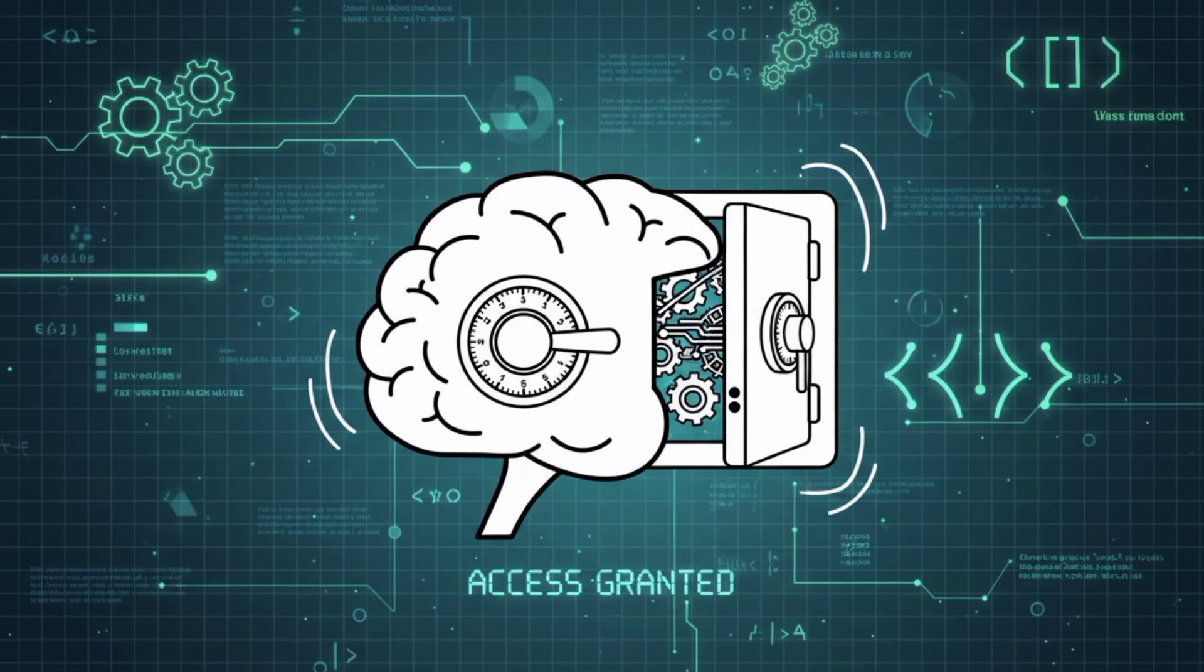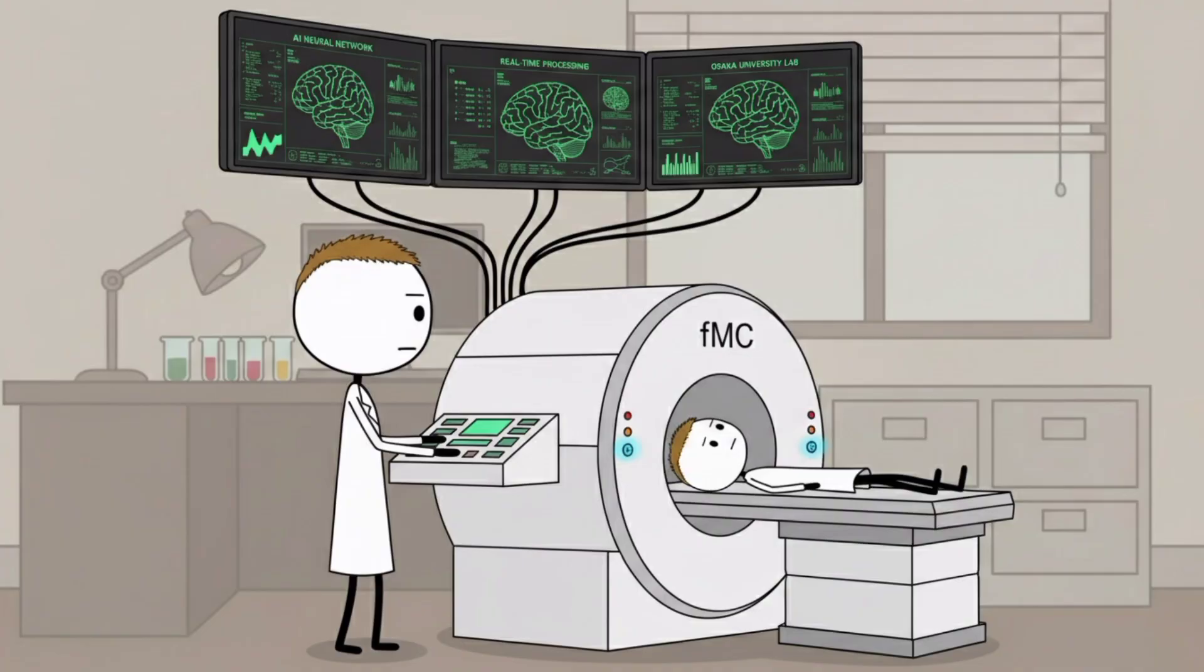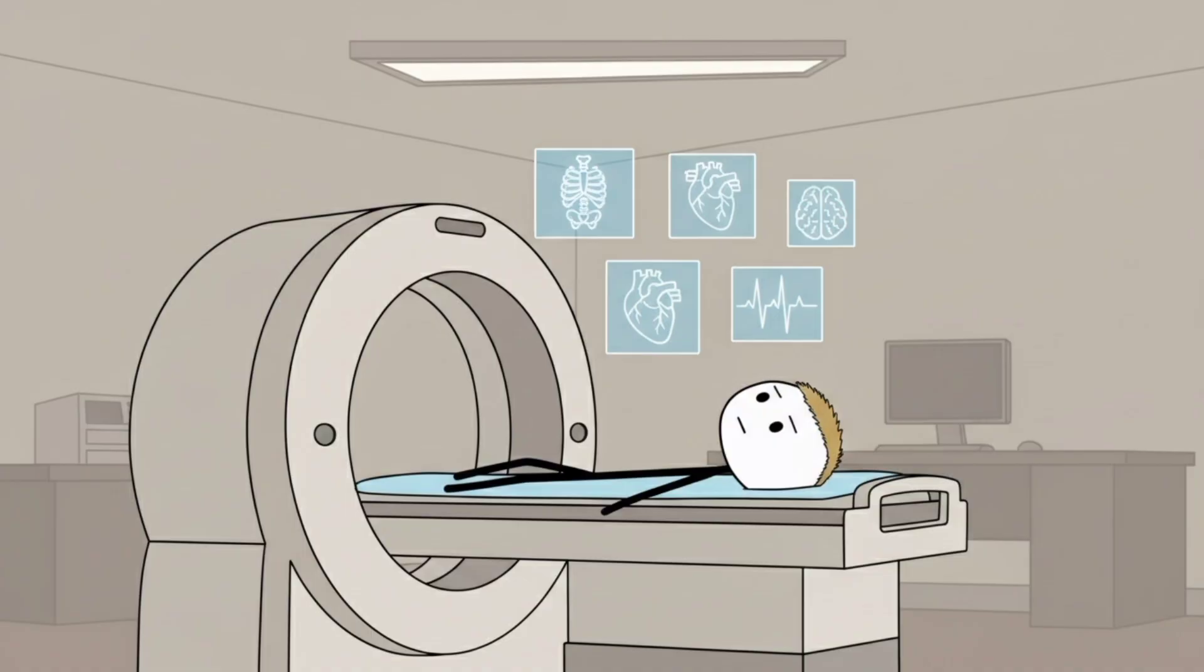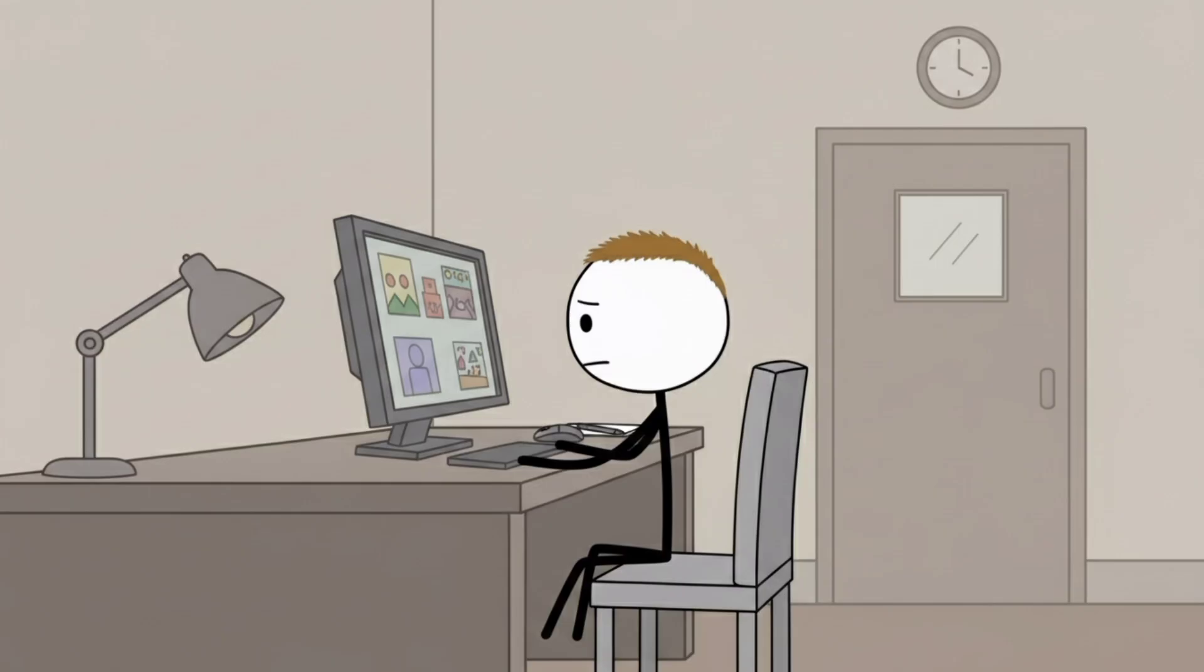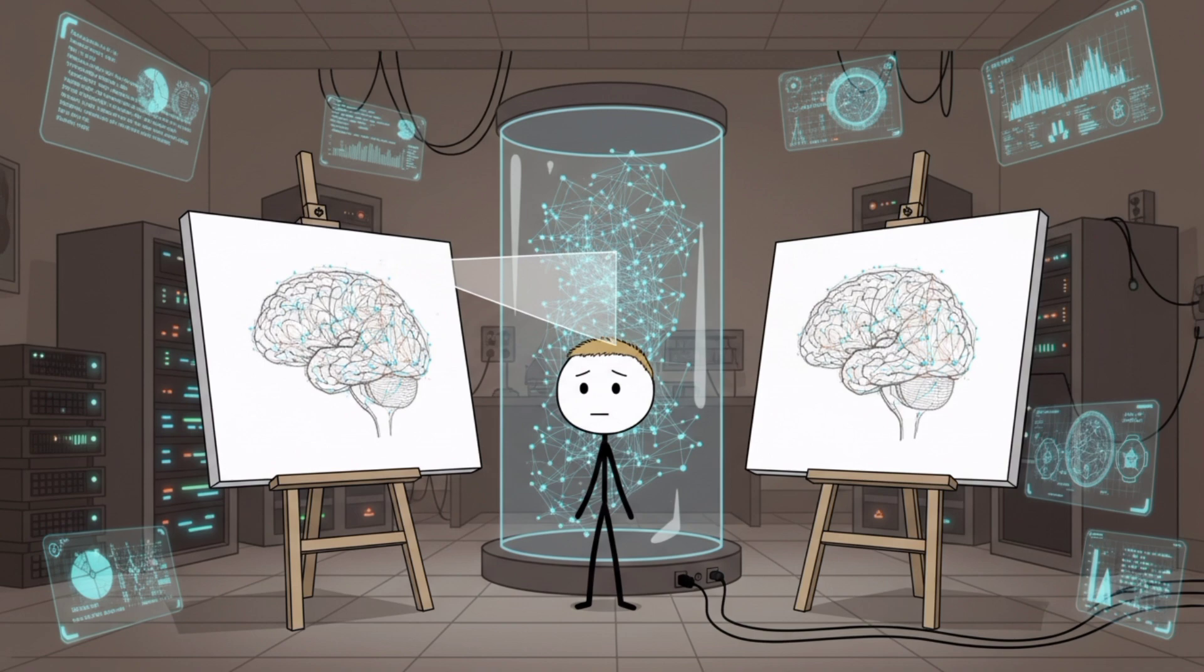Your brain is no longer a locked vault. Researchers at Osaka University used FMRI brain scans, combined with artificial intelligence, to decode visual imagery directly from people's minds. Participants looked at pictures, and the AI reconstructed what they were seeing based purely on brain activity.